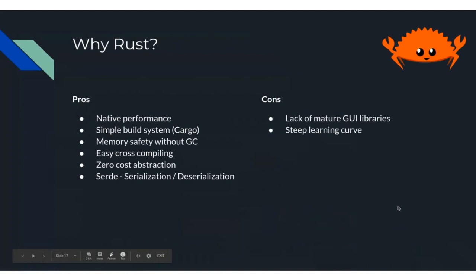Why Rust? Native performance, simple build system with Cargo, memory safety without any garbage collection, easy cross-compiling for various architectures and operating systems, zero-cost abstraction meaning I can write high-level code and it will compile as fast as possible. There's also the Serde serialization and deserialization library, which is great at converting Rust data structures to and from JSON. The cons of Rust are a current lack of mature GUI libraries and a steep learning curve if you come from an object-oriented programming background.